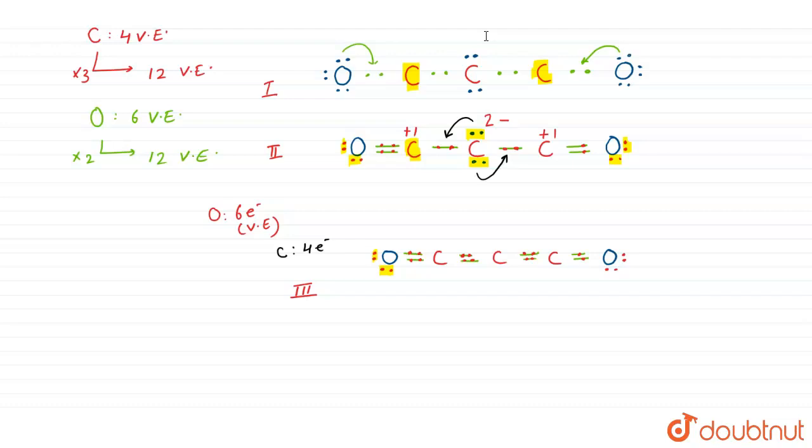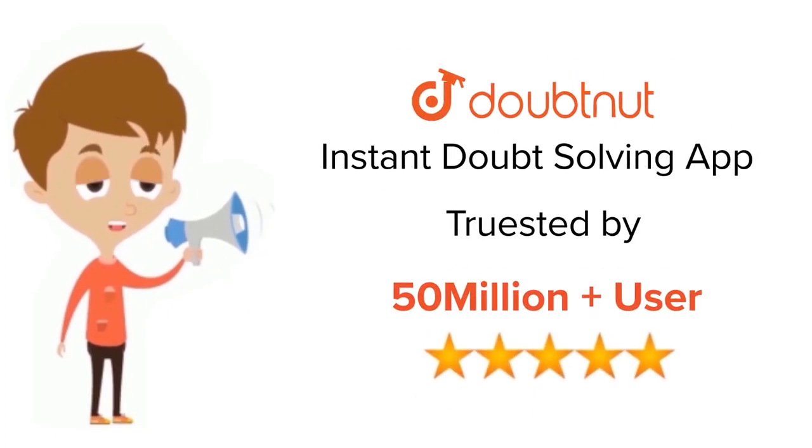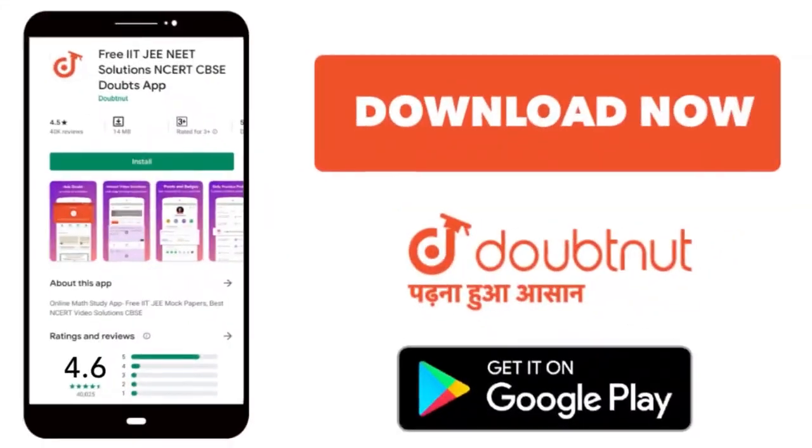The octet is complete and no charge distribution, so it is the stable Lewis dot structure. Thank you very much. For class 6 to 12, IIT-JEE, and NEET level, trusted by more than 5 crore students, download Doubtnet app today.